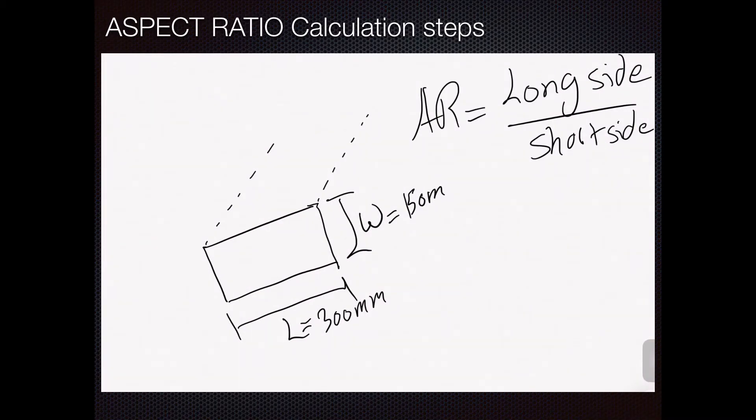So guys, in this demonstration, I'll be showing you how to go about calculating the aspect ratio. So, as we've defined the aspect ratio as the long side over the short side, take a look at the example of the duct, a schematic of the duct that we have, such that L is about 300 mm and W is 150 mm, where L is the long side and W is the short side.